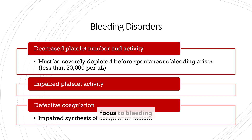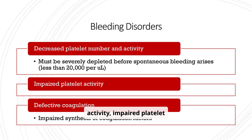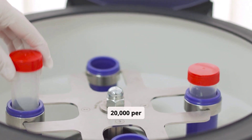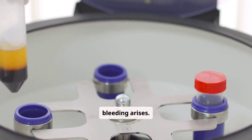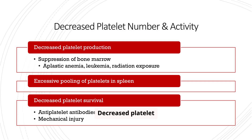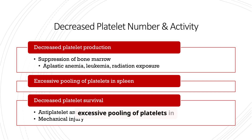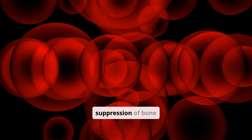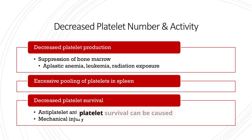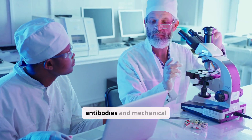Now let's shift our focus to bleeding disorders. These can be caused by decreased platelet number and activity, impaired platelet activity, or defective coagulation. Platelets must be severely depleted — less than 20,000 per µL — before spontaneous bleeding arises. Decreased platelet number can be caused by decreased platelet production, excessive pooling of platelets in the spleen, or decreased platelet survival. Decreased production can result from suppression of bone marrow, aplastic anemia, leukemia, and radiation exposure. Decreased platelet survival can be caused by antiplatelet antibodies and mechanical injury.